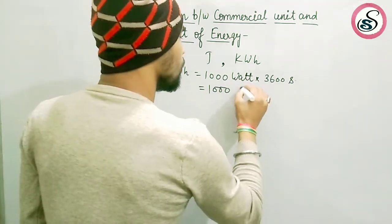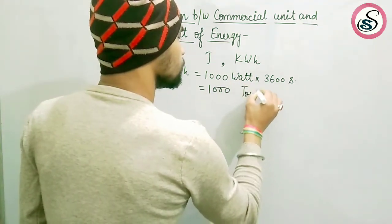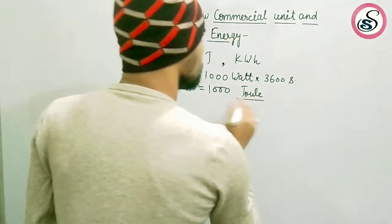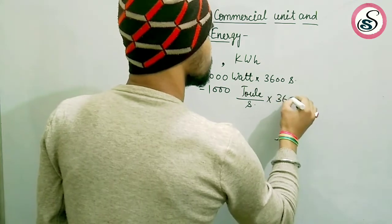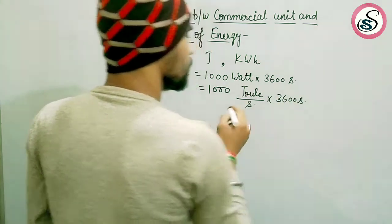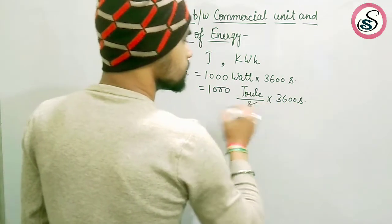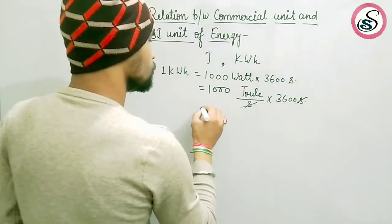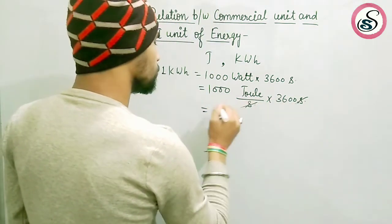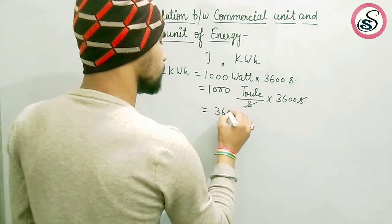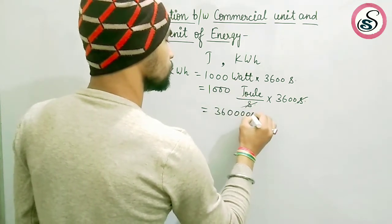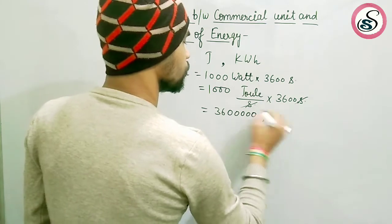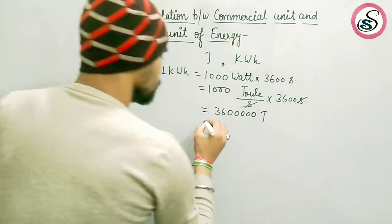is equal to what? Joule per second, okay, multiplied by 3600 seconds. This second is cancelled by this, so it is equal to 3,600,000 Joule. Clear? We can write...